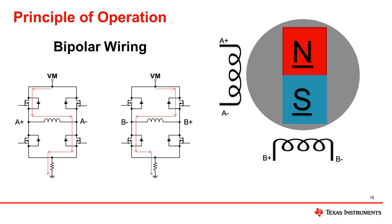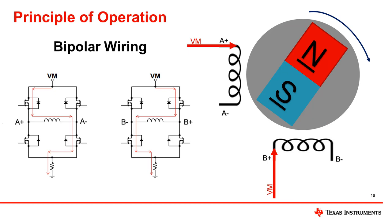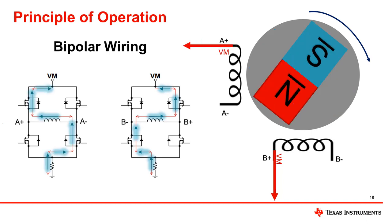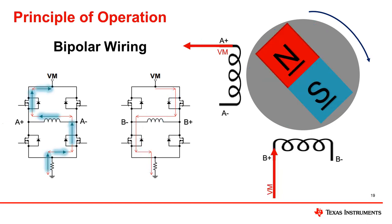Let's talk about bipolar steppers first. Bipolar motors use H-bridges to allow current to flow in both directions through the winding. Bipolar drivers also use the full amount of copper windings, so the motor delivers more torque. The direction of the current determines the polarity of the magnetic field created by that winding, so the motor will rotate in response to the polarity change.